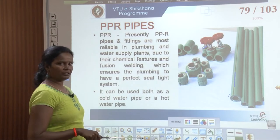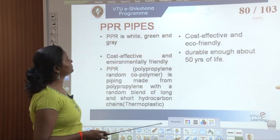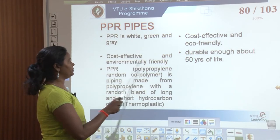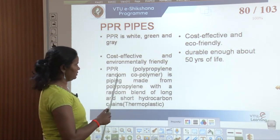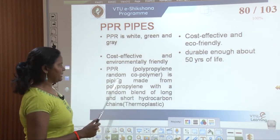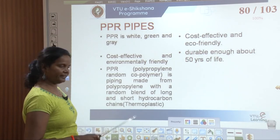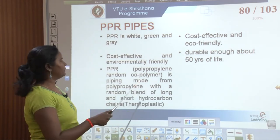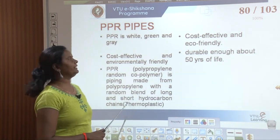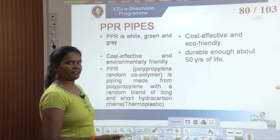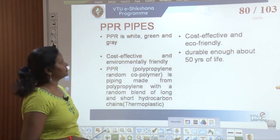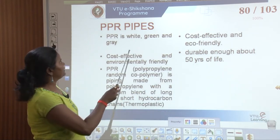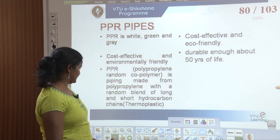PPR pipes can be used for both hot water and cold water. They are very eco-friendly and cost-effective. PPR stands for polypropylene random co-polymer, which is a piping made from polypropylene with a random blend of long and short hydrocarbon chains. It is also a thermoplastic but more cost-effective and environmentally friendly. They are durable for about 50 years and are available in white, green, and grey.